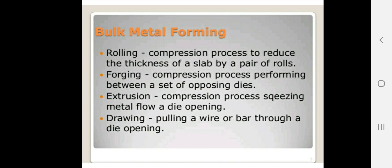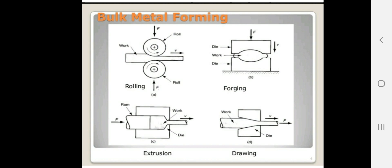These bulk metal forming processes were studied in PP1. Drawing is the process of pulling a wire or bar through a die opening. As seen in figures: in rolling, metal is spread between two rolls; in forging, metal is compressed between two dies (punch and die); in extrusion, compressed material is pushed through a small opening; and wire drawing is also shown. These are bulk metal forming processes used in mass production.